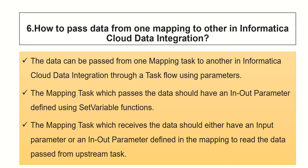The sixth question is how to pass data from one mapping to another in Informatica Cloud data integration. Data can be passed from one mapping to another in Informatica Cloud through a task flow using parameters. The first mapping task, which passes the data, should have an inner parameter defined using the set variable function. We can use the set variable function at the expression level to assign a value to the parameter. The second mapping task, which receives the data, should have either an input parameter or an inner parameter defined in the mapping to read the data passed from the upstream task.